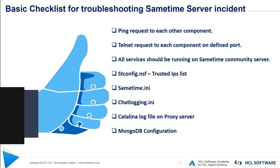The first thing we should check is whether all components are able to ping each other. Then we should perform a telnet request from every component to each other on defined ports. Then we should check whether all services are running properly on the Sametime community server. Followed by that, we should check the trusted IPs list on the stconfig.nsf database. Then we should check the sametime.ini and chatlogging.ini files.